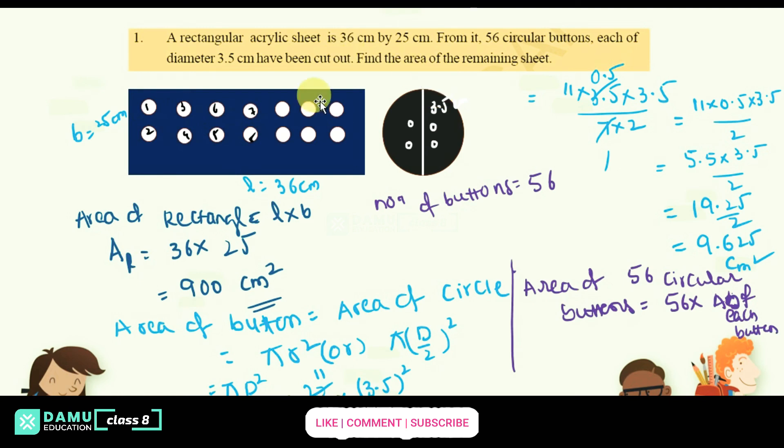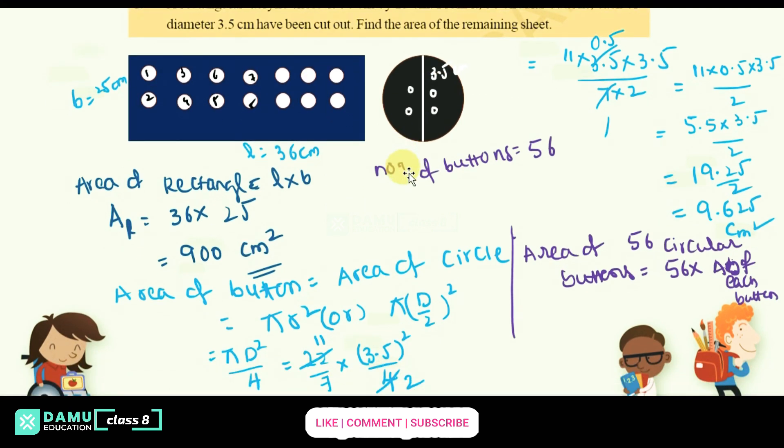Area of each button. So area of each button, that is 56 into area of each button is 9.625. Then what you will get, we are going to check, so 9.625 into 56, that is 539 centimeter square.